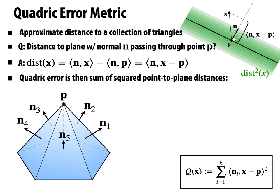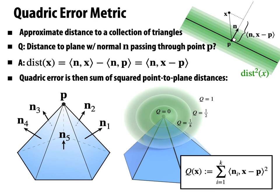We can use the quadric error metric to measure distance to any collection of planes — not just those from triangles around one vertex, but from different triangles across the mesh. To make this work, we express the quadric error in homogeneous coordinates. A plane through point P with unit normal n can be encoded as a homogeneous vector v = (a, b, c, d), where (a, b, c) is the normal and d = −n·P is the offset.